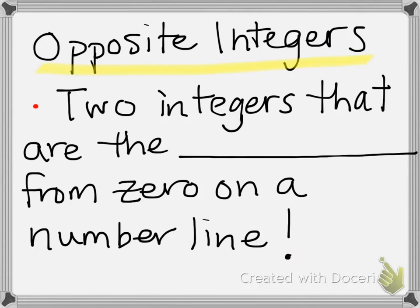I'm going to share my answer which might be a little bit different than yours but as long as we have the same key information. I said that opposite integers are two integers that are something from zero on the number line. Any idea what I wrote? I said that they are the same distance from zero on a number line. So if your answer is a little bit different than that that's fine but that's how I like to remember it.